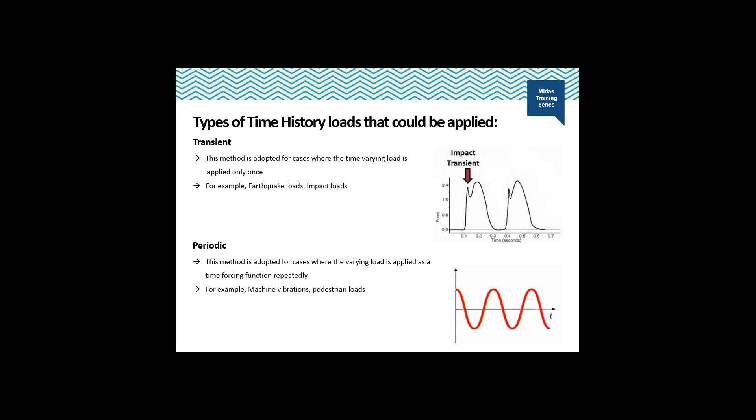The second type is the periodic load. This method is adopted for cases where the varying load is applied as a time forcing function repeatedly — that is, some force always acting in the system to maintain the vibration. Examples of such loads include machine vibration as well as pedestrian loads.